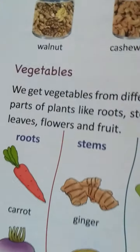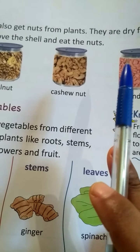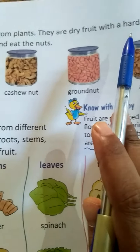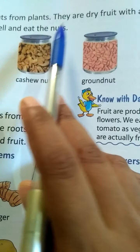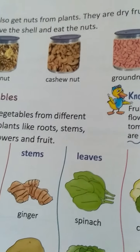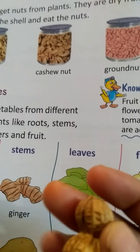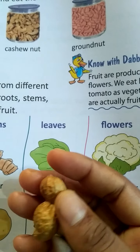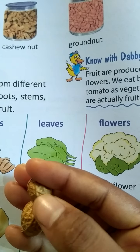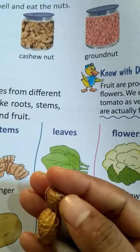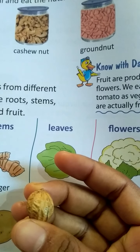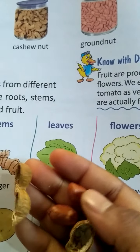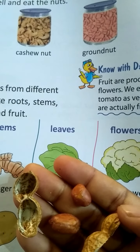We also get nuts from plants. Nuts are dry foods with a hard shell. We remove the shell and eat the nuts. Look — this is peanut. This is the dry food, and this is the hard shell. We remove the hard shell and eat these nuts.